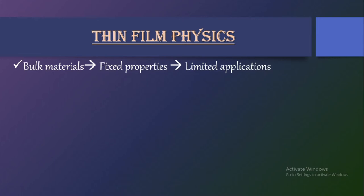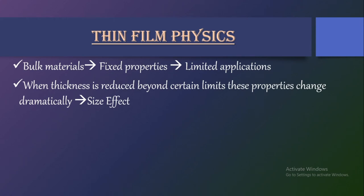Bulk materials — that is three-dimensional materials, whether semiconductors or their optical properties — have fixed properties, and that's why their applications are also limited. This is the limitation of bulk materials. If we need more applications, we need to reduce the size. When the thickness of any semiconducting material is reduced beyond a certain limit, the properties show a drastic change called the size effect, which adds flexibility in designing devices for particular applications.